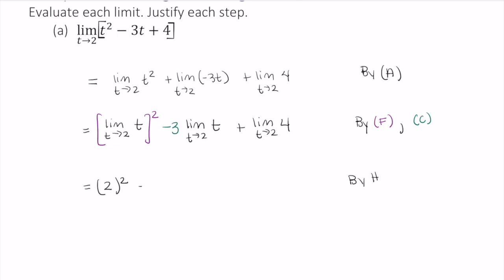I can do the same thing here. That is replace the t with the 2 again by rule H. And then finally, this limit here is evaluated using G. That is the limit as t approaches a value of a constant is just going to equal the constant. And that is by G. And I went ahead and color coded this a little bit better.